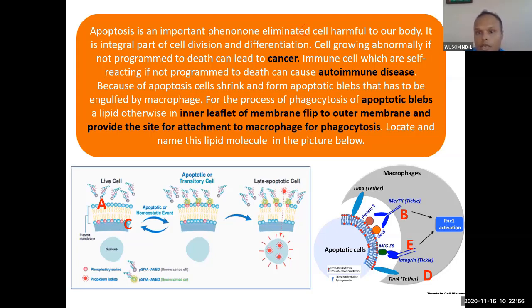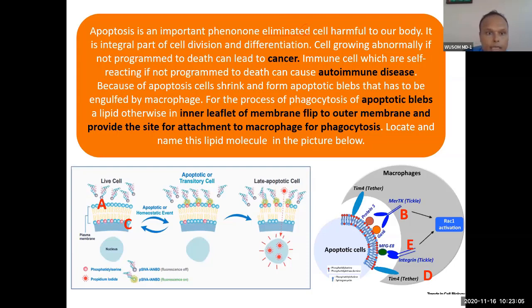Cells growing abnormally, if not programmed to die, can lead to cancer. Similarly, self-reacting immune cells, if not programmed to death, will cause autoimmune disease.